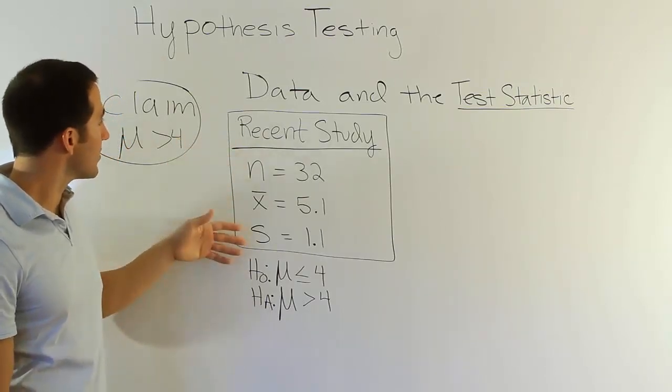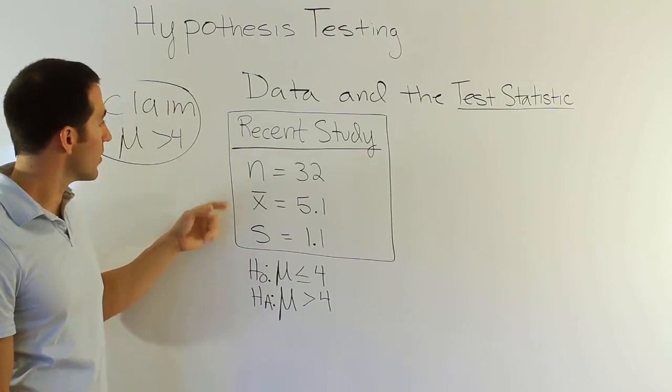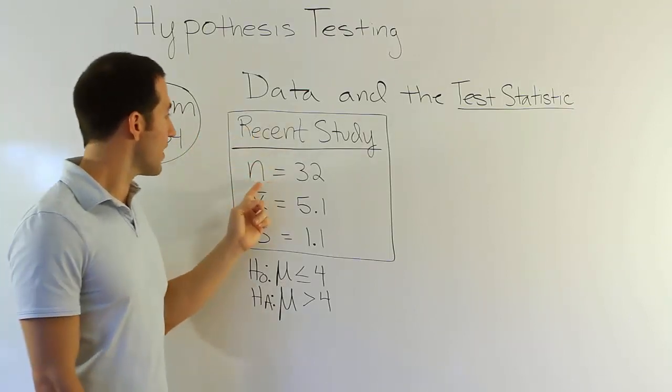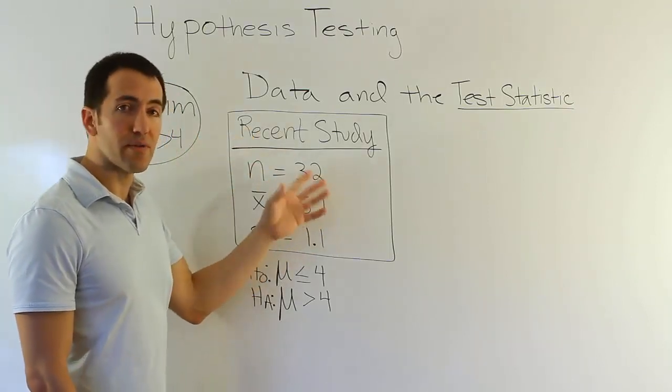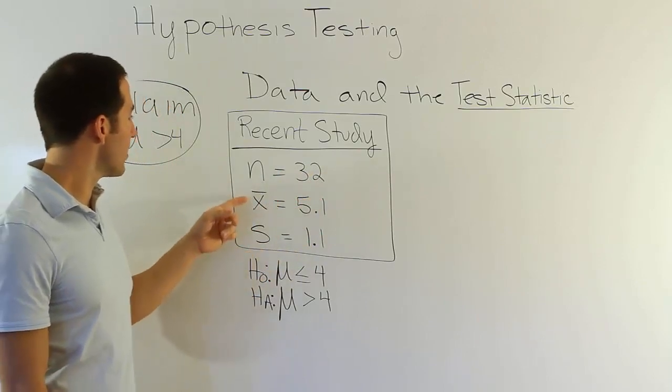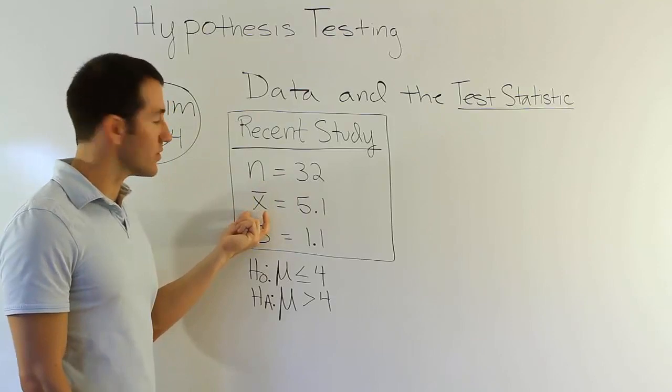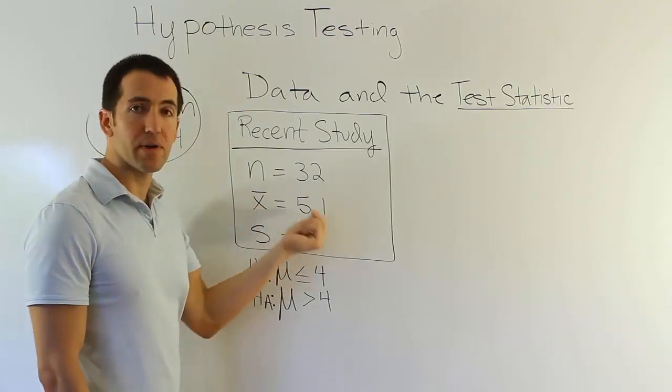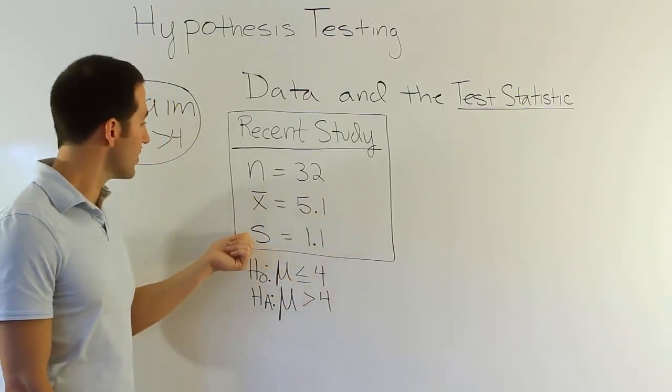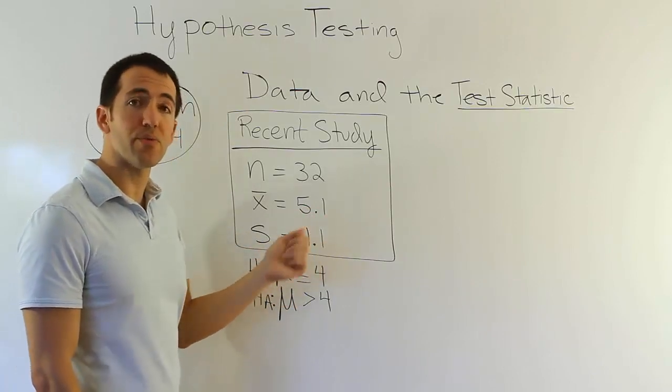We would have had some data from a study somewhere along the way that says a recent study found that there were 32 recent college graduates with a bachelor's degree. Among that sample, 32 randomly selected students with bachelor's degrees, the average time to complete that degree was 5.1 years, and the standard deviation for that group was 1.1 years.